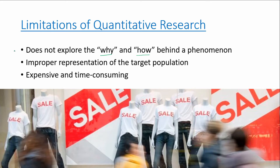People are influenced by many things in the environment, and their thoughts and actions are different from one another and may even change. Improper representation occurs because, many times, we do not gather information from everyone in the target population. Rather, only a portion or a sample becomes the representation of the population.